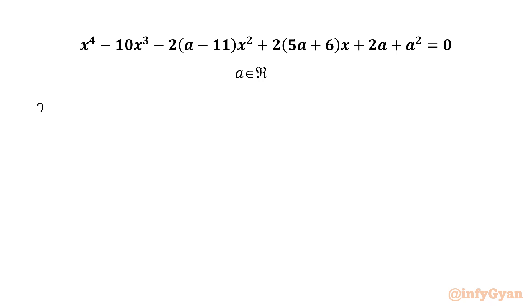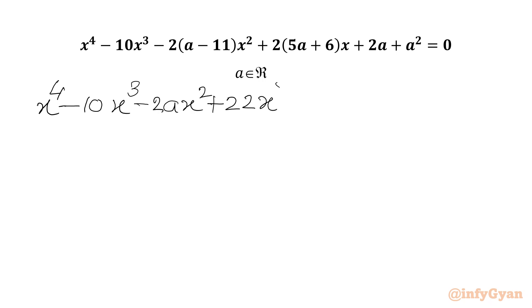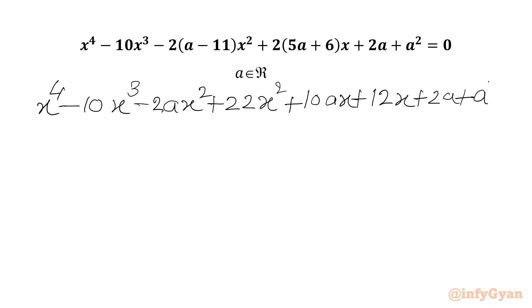Let me simplify our LHS. I will write x⁴ minus 10x³ minus 2ax² plus 22x² plus 10ax plus 12x plus 2a plus a² equal to 0.